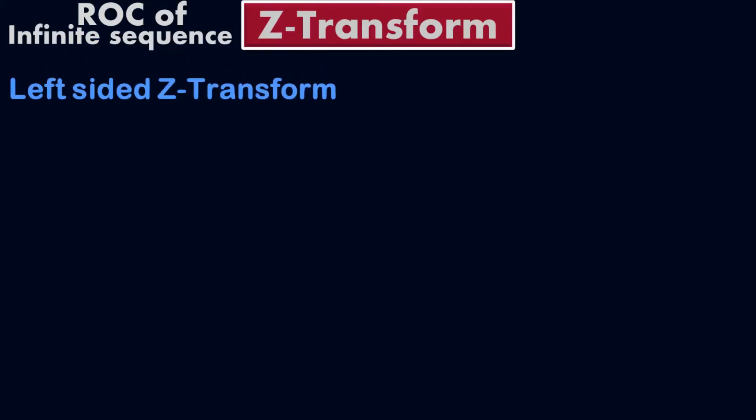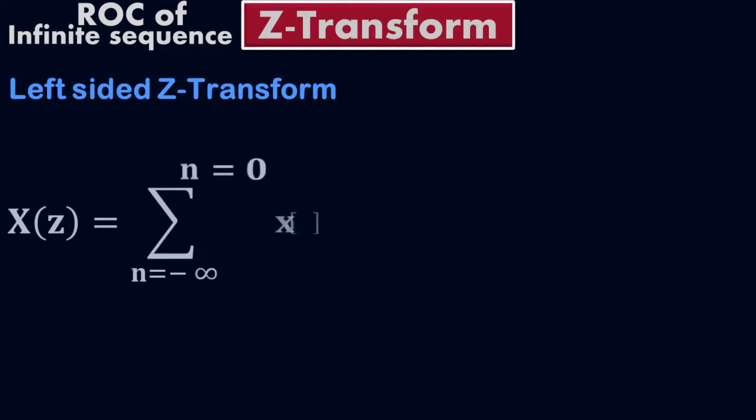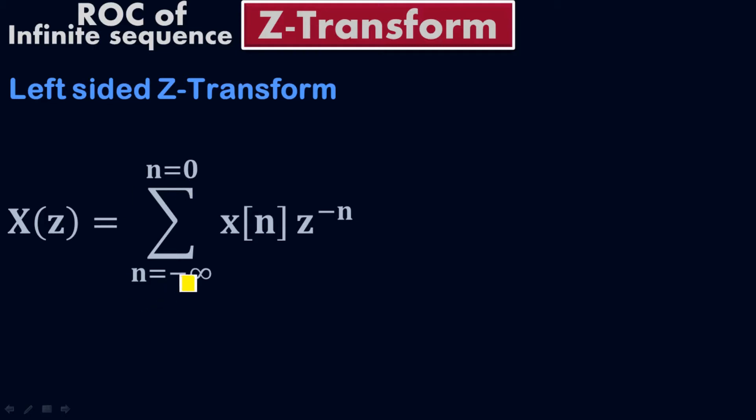Let me show you the region of convergence for the left-sided Z-transform, which is a type of infinite sequence. From the equation of the left-sided Z-transform, x of z equals the summation of x of n times z to the negative n, where n starts from negative infinity up to 0. This is the typical formula for the left-sided Z-transform.